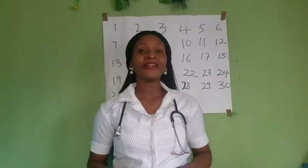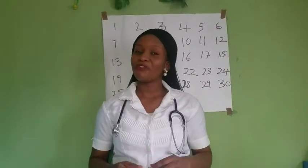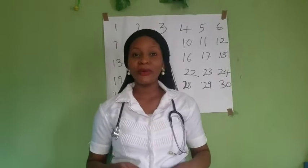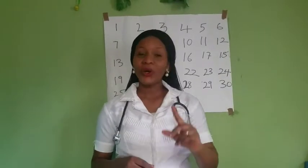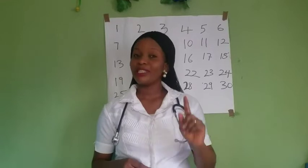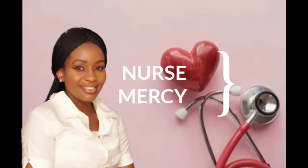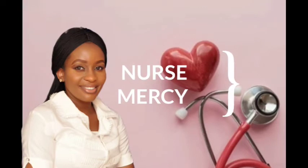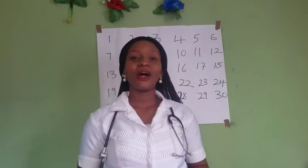Ovulation is the release of a matured egg from the ovary, and it takes place once every month depending on the woman's menstrual cycle. Normally, ovulation occurs 14 days before the next menstrual period.